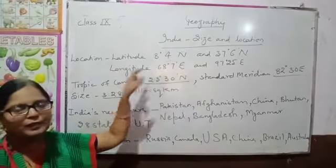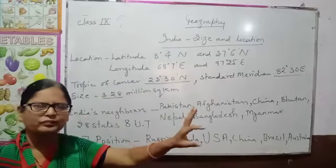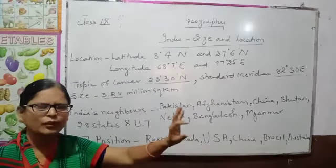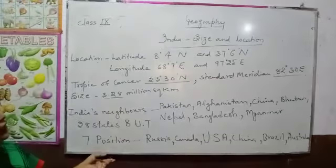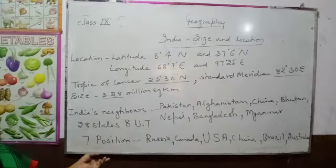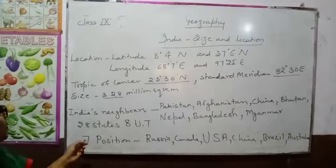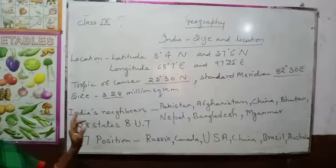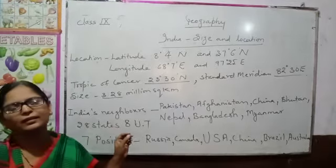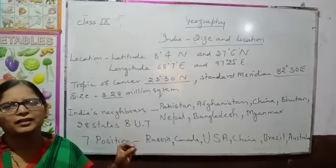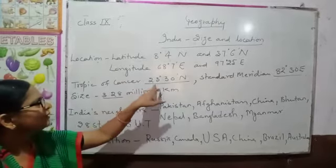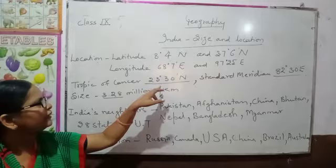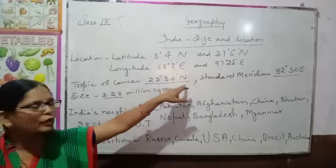Longitude in India covers Gujarat and Arunachal Pradesh — 68 degree 7 East and 97 degree 25 East. There is an imaginary line, the Tropic of Cancer. It is 23 degree 30 North.